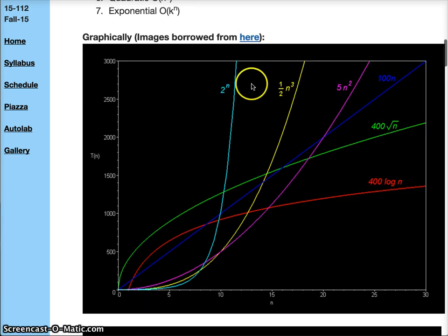We can see through this graph why we don't care about lower order terms and why we don't care about constants. We know that logarithmic is the best possible function family because in the long run it goes very slowly.